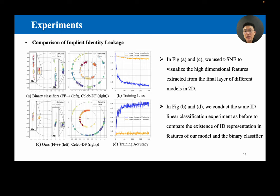In figure B and D, we conduct the same ID linear classification experiment as before to compare the existence of ID representation in features of our model and the binary classifier. Results show that linear classification on features of binary classifiers were easier to converge and achieved better accuracy than features of our model. These results indicate that our model successfully reduced the influence of implicit identity leakage.